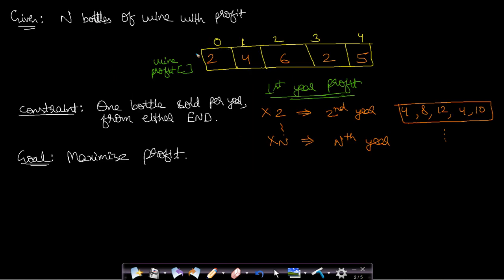The problem says that you have n bottles of wine with given profit margins. Assume we have five bottles arranged from left to right, and these are the profits you would get if you sell these items in the first year. As the wine gets older, it will be sold for y times the number of years that have passed after it is manufactured. The first year profit margins are 2, 4, 6, 2, 5 for these five bottles. In the second year it will get doubled: 4, 8, 12, 4, and 10. After n years the profit becomes n times the original.